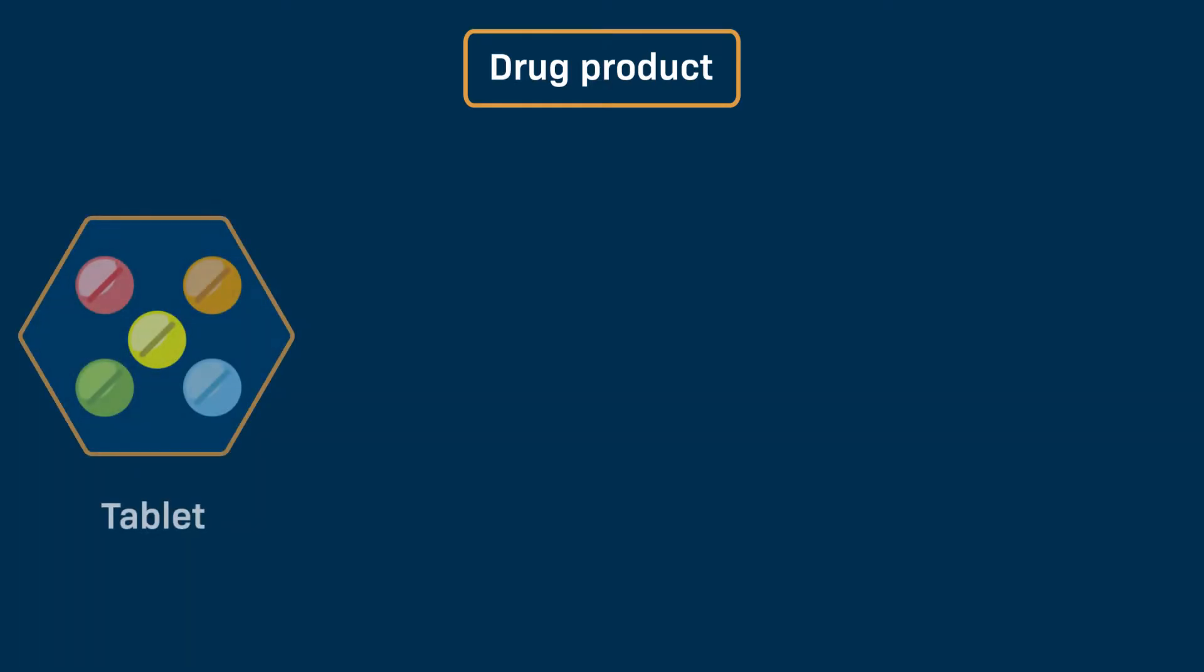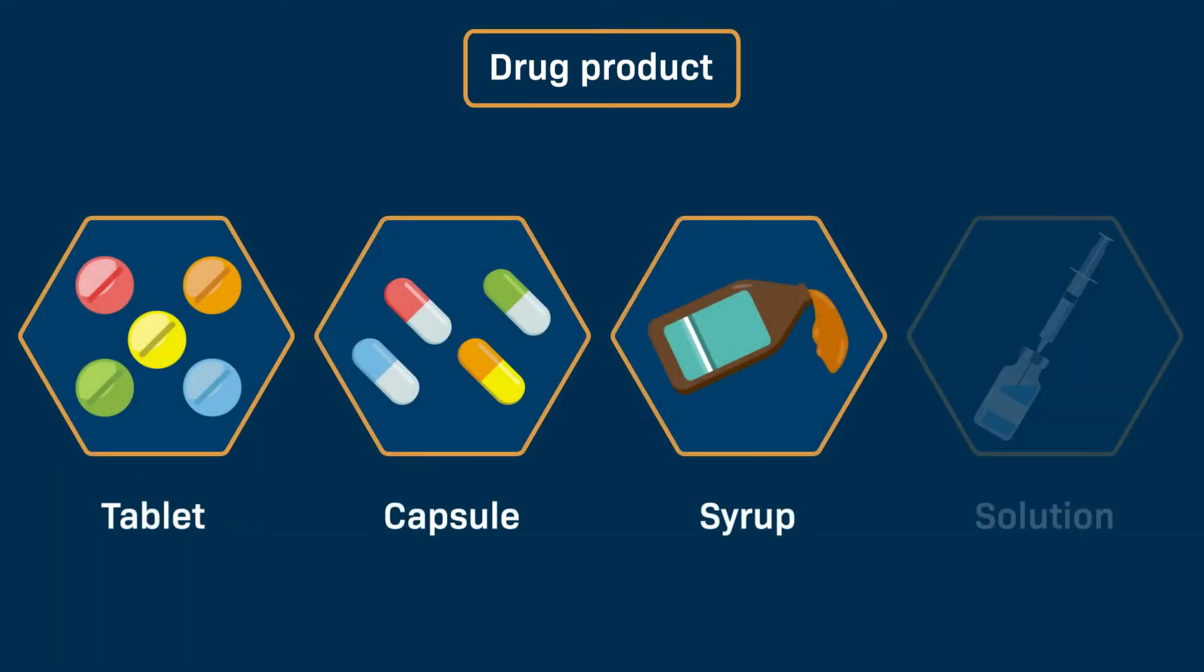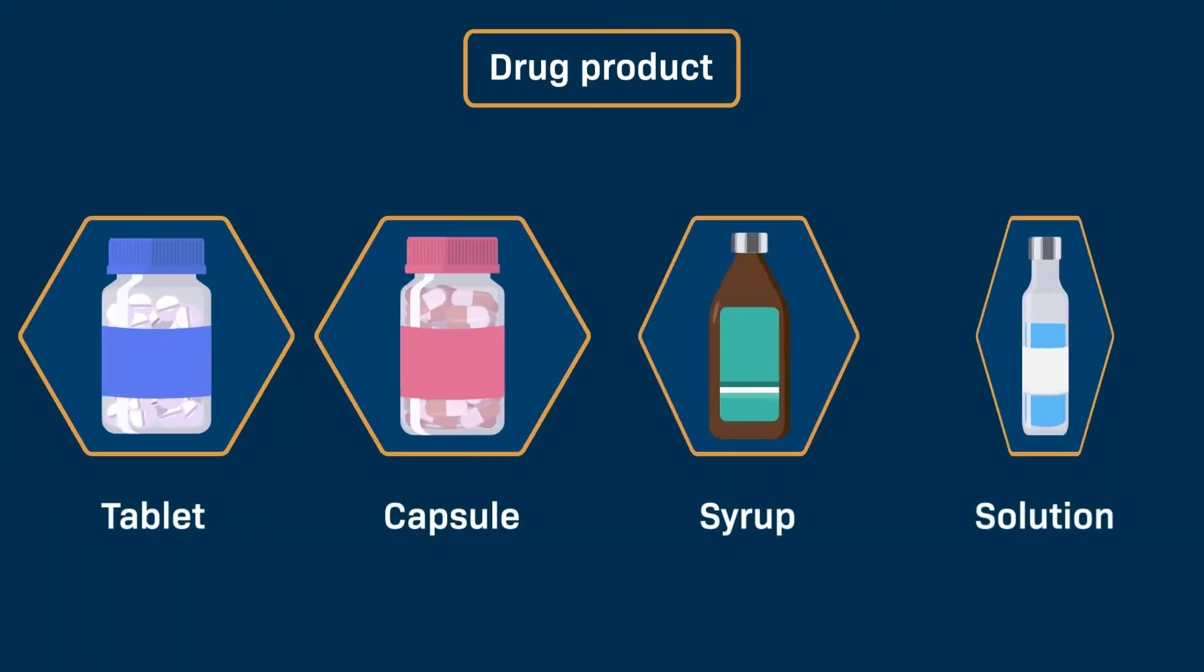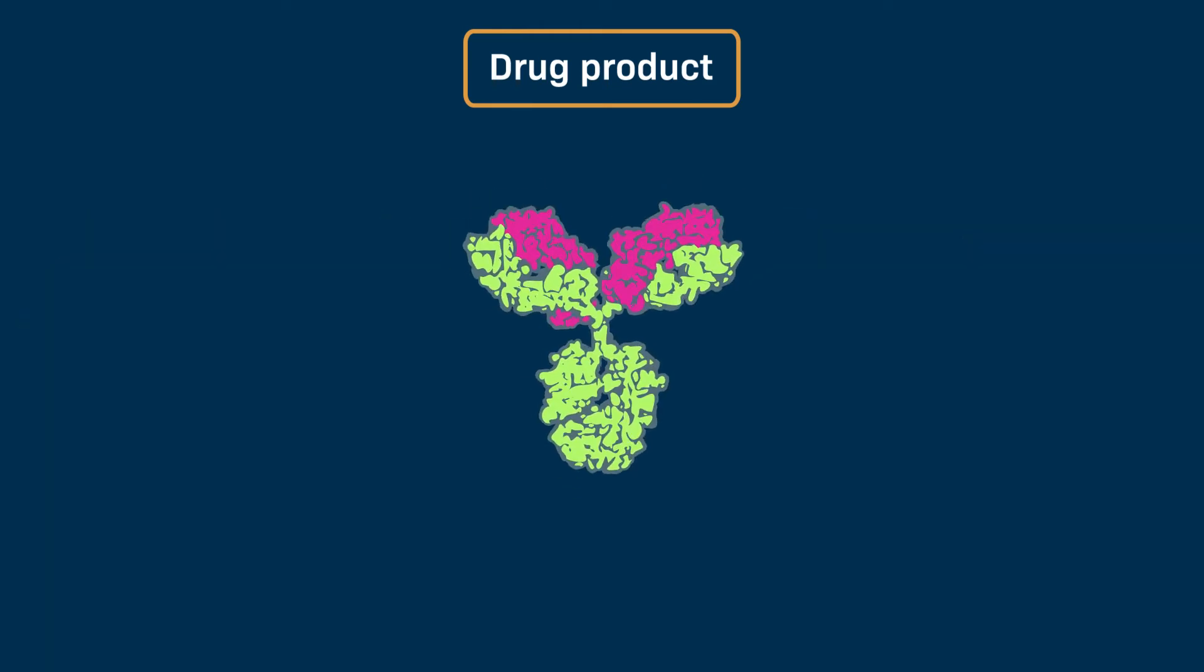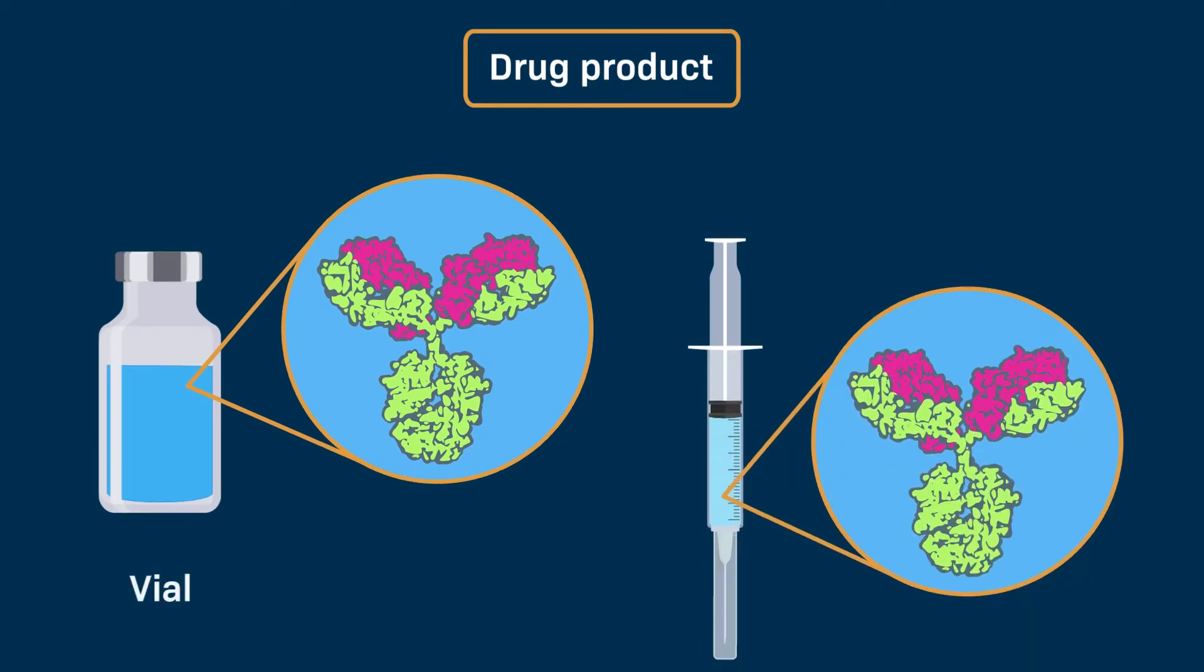A drug product is a final dosage form, such as a tablet, capsule, syrup, or solution of the drug in its designated container. For example, the drug product for a therapeutic protein solution can be contained in a vial or a syringe.